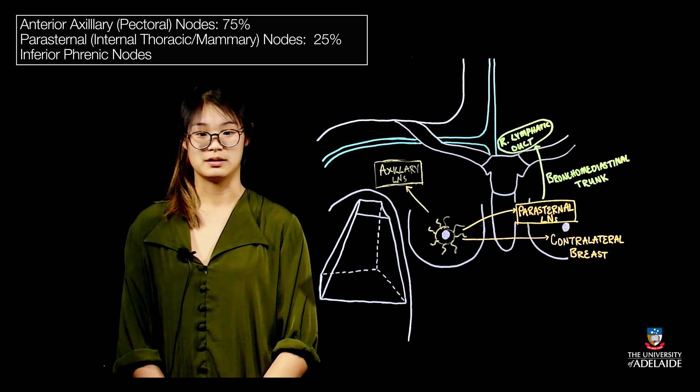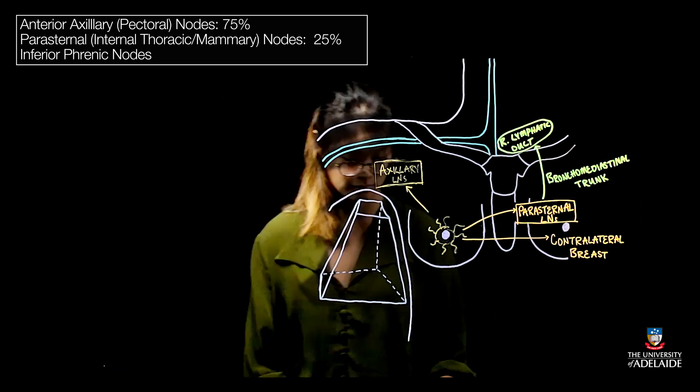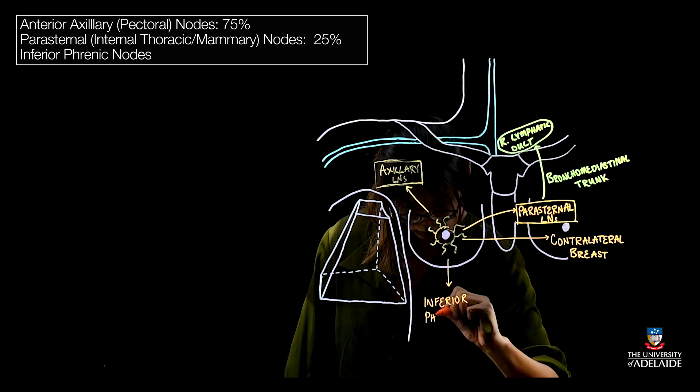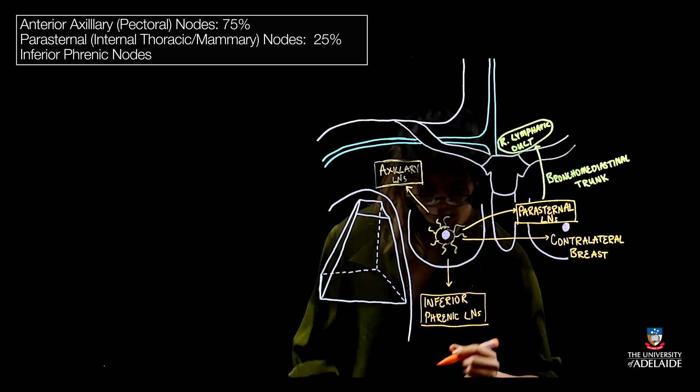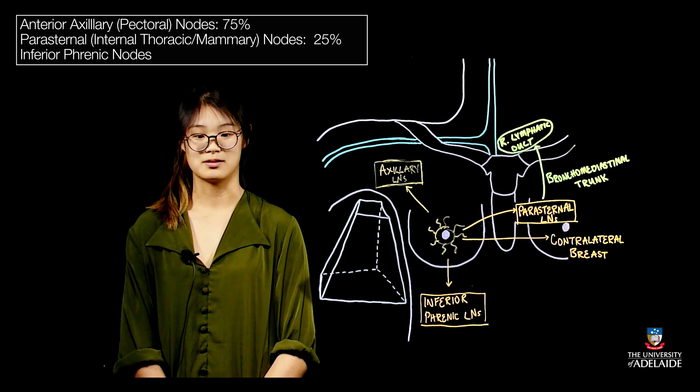Another important pathway is to the inferior phrenic lymph nodes. These sit just below the diaphragm. The inferior phrenic lymph nodes drain from inferior aspect of the subareolar plexus.